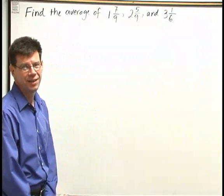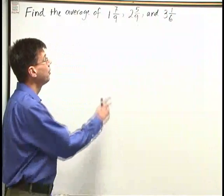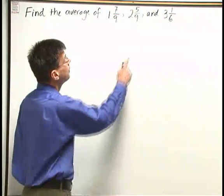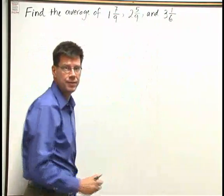Here's a problem where we're going to calculate the average of three numbers: one and seven-ninths, two and five-ninths, and three and one-sixths.